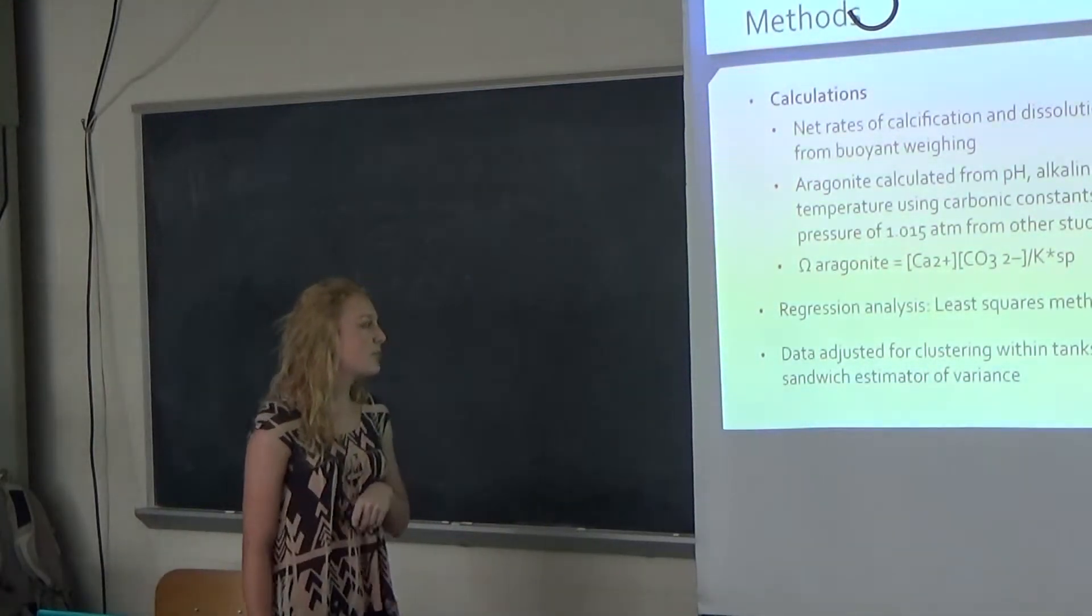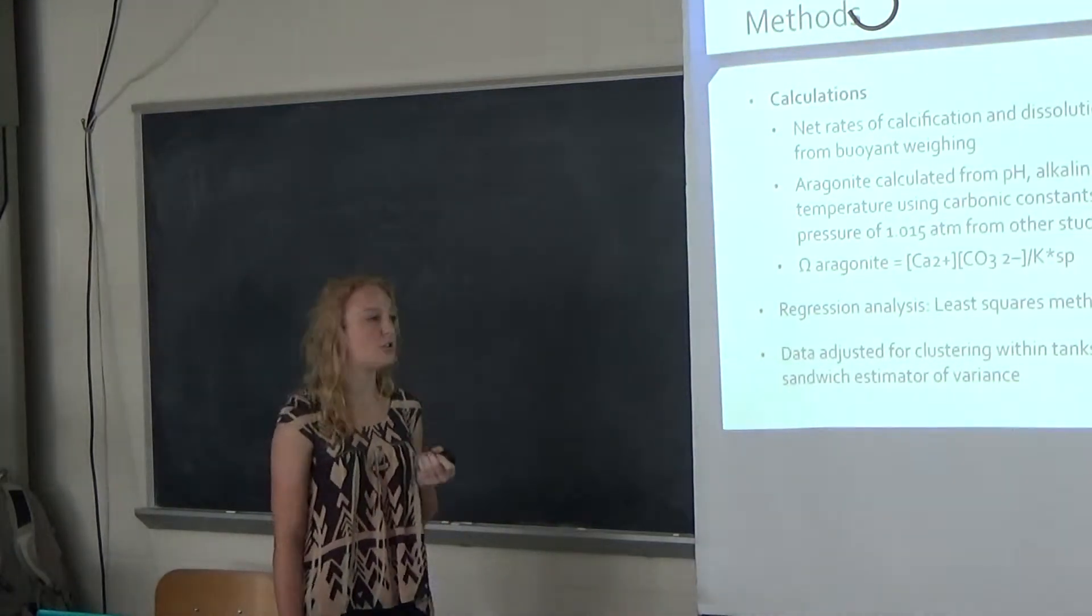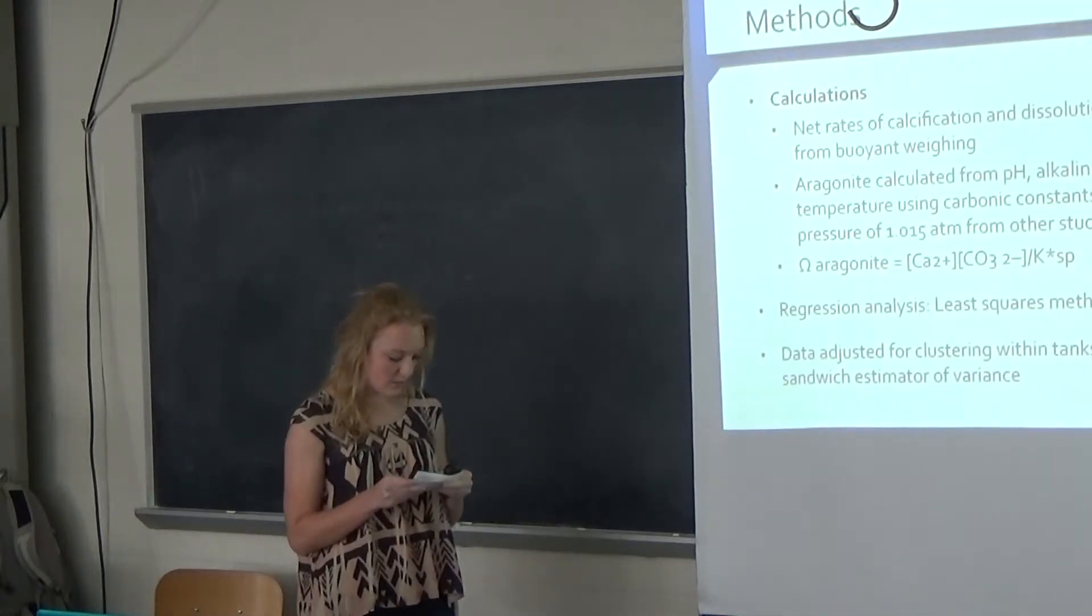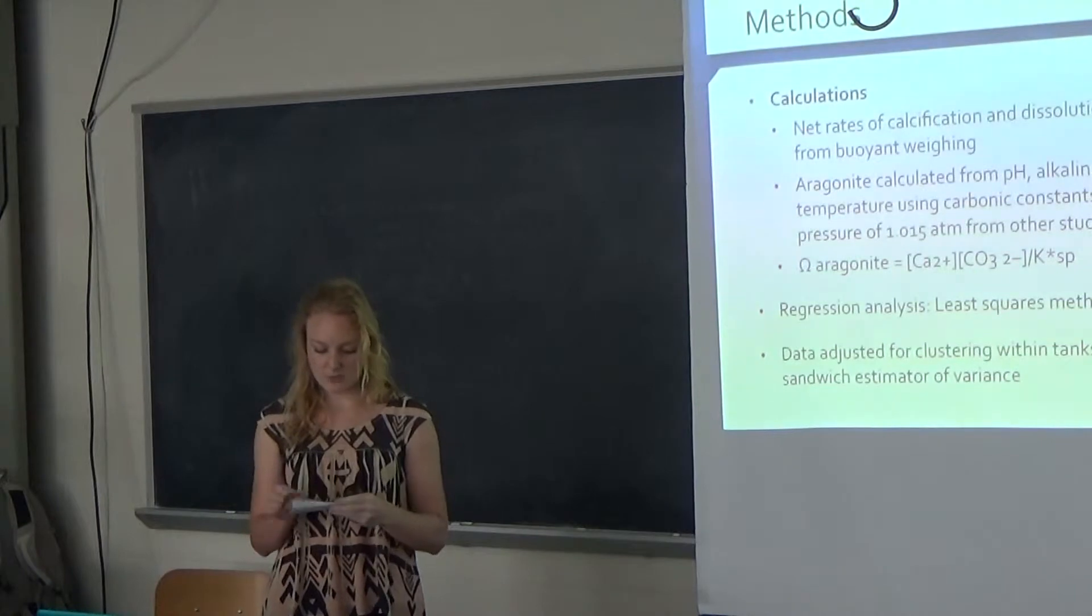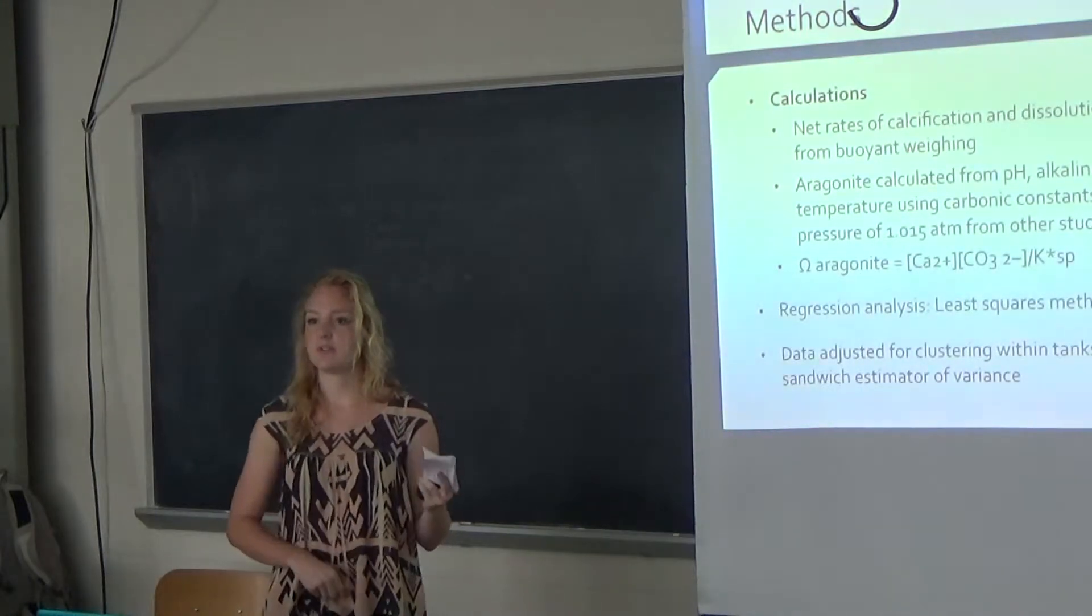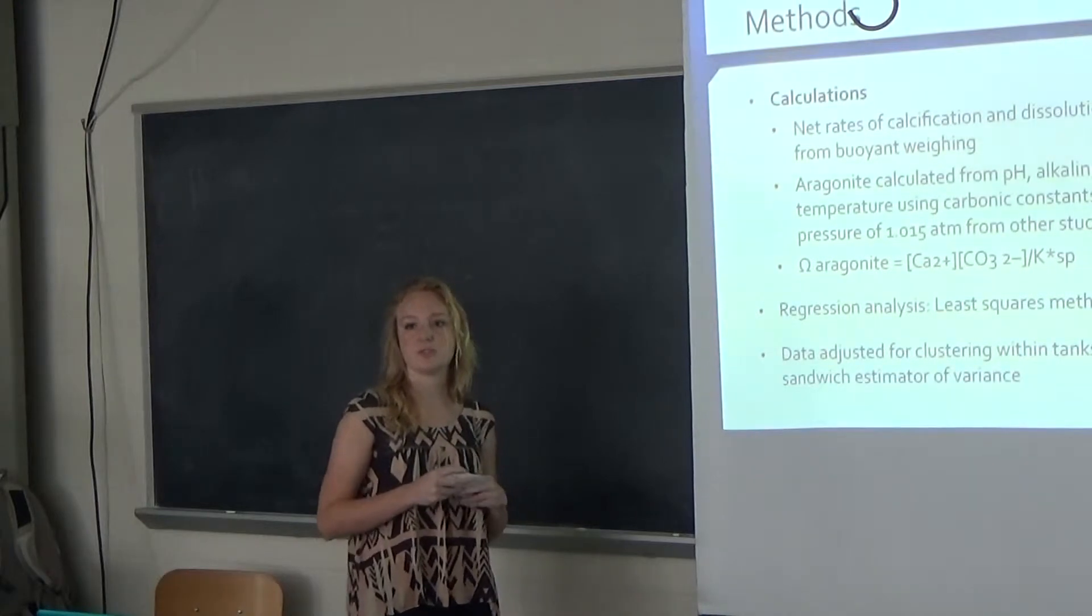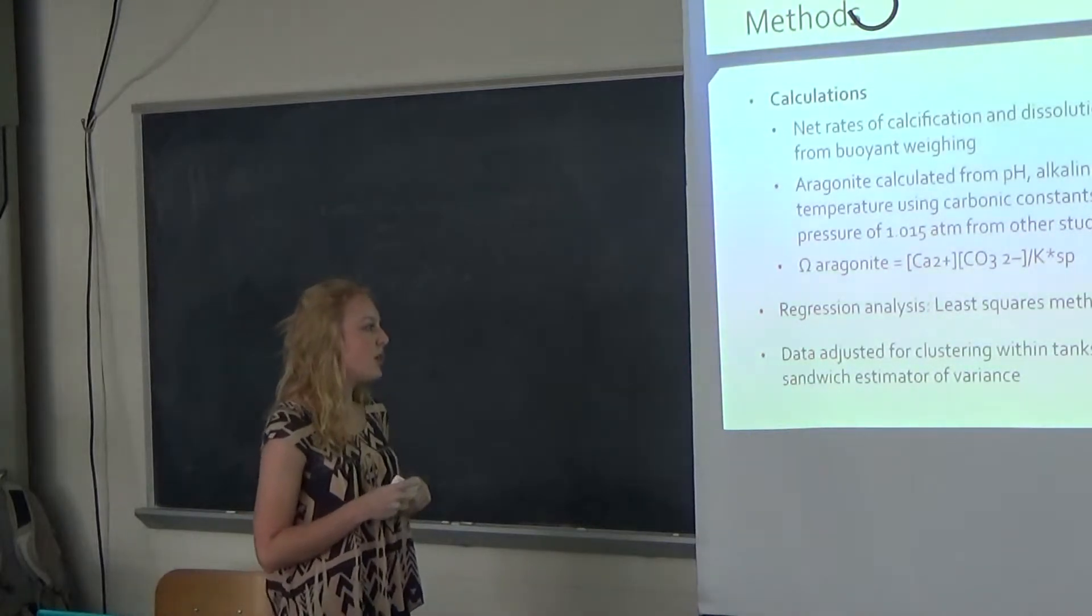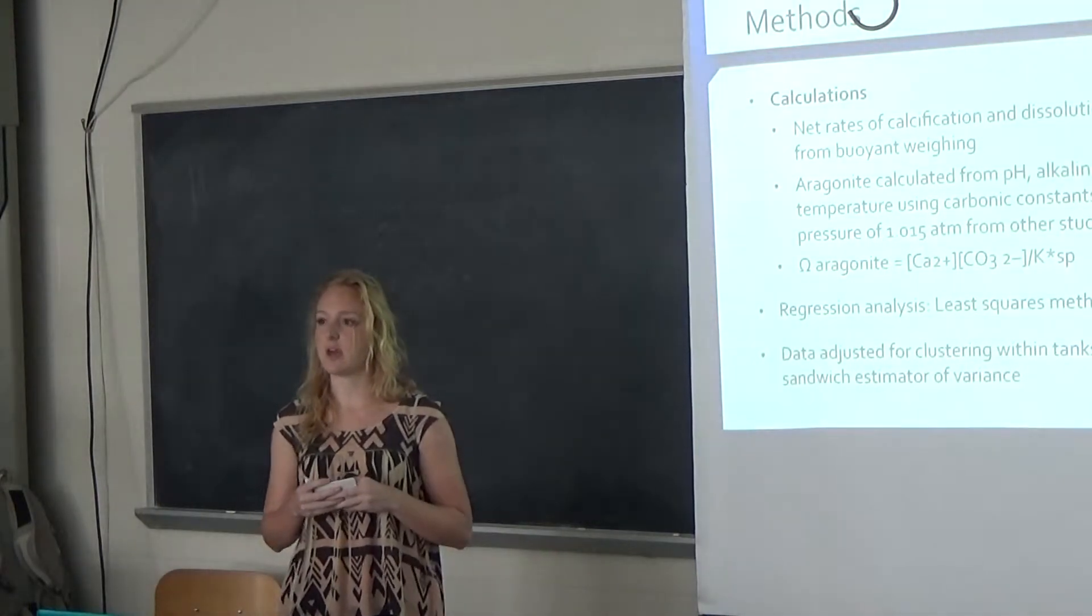For this whole experiment, they did a regression analysis to compare the levels of net calcification and dissolution compared to the saturation state. They used the least squares method, which is an overall solution that minimizes the errors from the individual equations. It minimizes the sum of the squared residuals or the differences between observed and fixed values, giving a really good regression line. They also used the Huber-White sandwich estimator of variance, which increased the P value and the statistical significance of each value calculated.